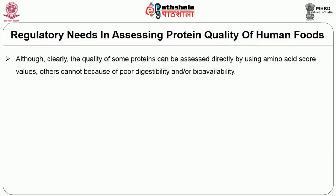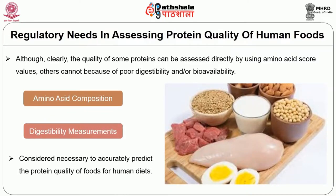Although the quality of some proteins can be assessed directly using amino acid score values, others cannot because of poor digestibility and/or bioavailability. Chemical scores can tell us the amino acid pattern and whether the composition is in balanced proportion, and amino acids can be screened by ninhydrin assay, ion exchange chromatography, or liquid chromatography separation techniques. However, the problem is that digestibility is not considered when assessing protein quality by chemical score alone — digestibility or bioavailability must also be taken into account.